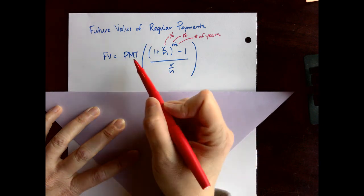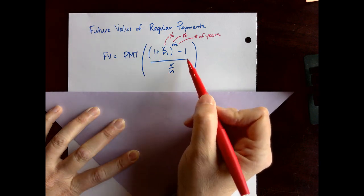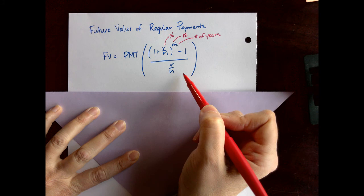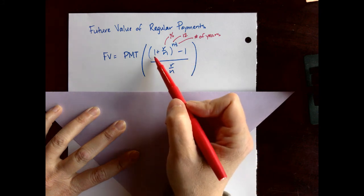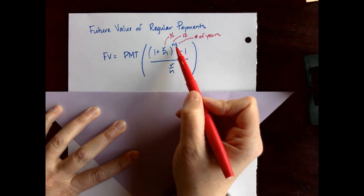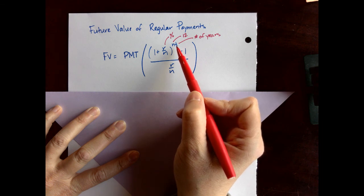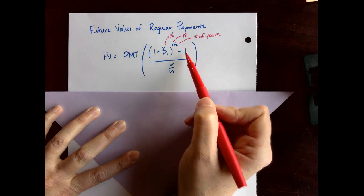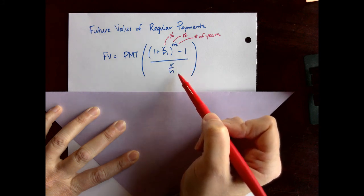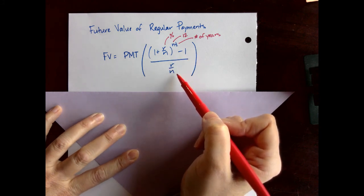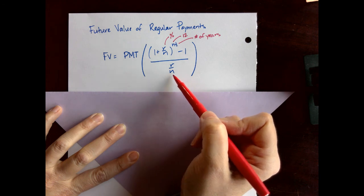So to make this happen we would take the payment and multiply by this large fraction. In the numerator of the fraction we have the quantity 1 plus R over N. That quantity raised to the Nt and then subtract 1. That's the entire numerator. And then in the denominator we have another fraction and that denominator's fraction is the rate divided by the N value, usually 12 for us.